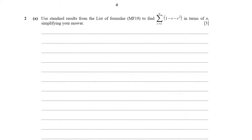Question number two, part A. Use standard results from the list of formulae MF19 to find the summation from r equals 1 up to n of the form 1 minus r minus r squared, in terms of n, simplifying your answer.